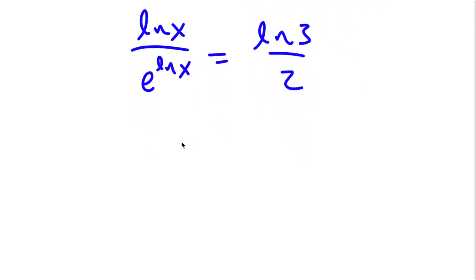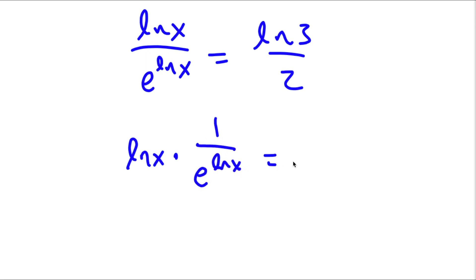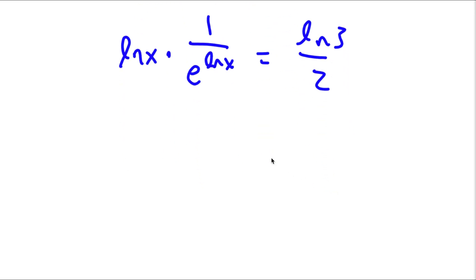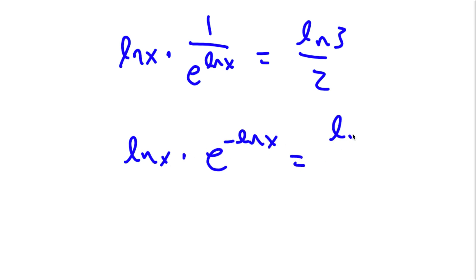So now ln x over e to the power of ln x is equal to ln 3 over 2. This is the same thing as ln x times 1 over e to the power of ln x is equal to ln 3 over 2. And 1 over e to the power of ln x is the same thing as e to the power of negative ln x, equal to ln 3 over 2.